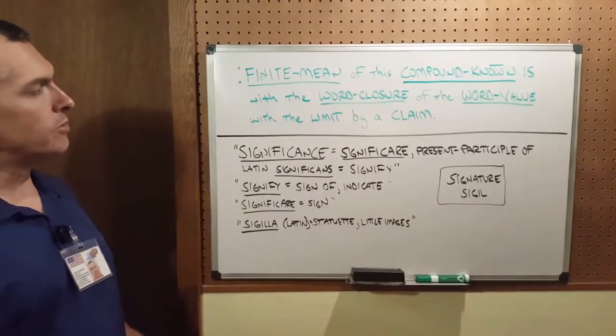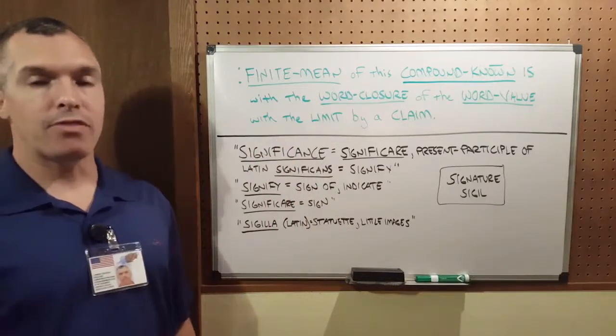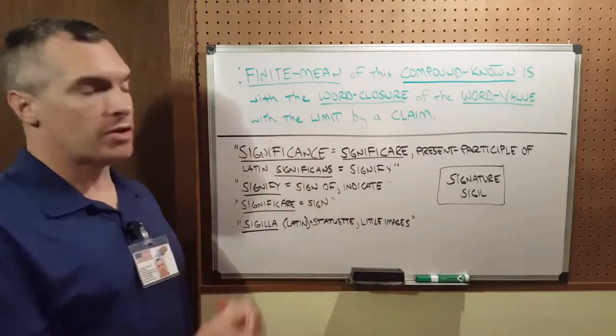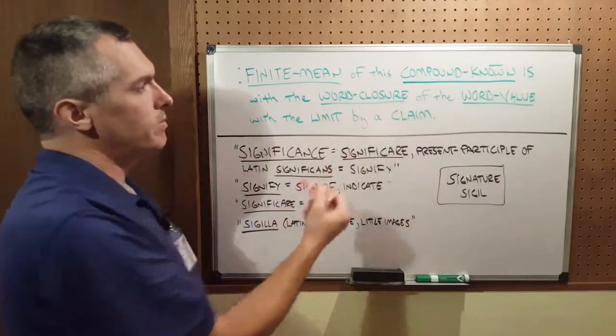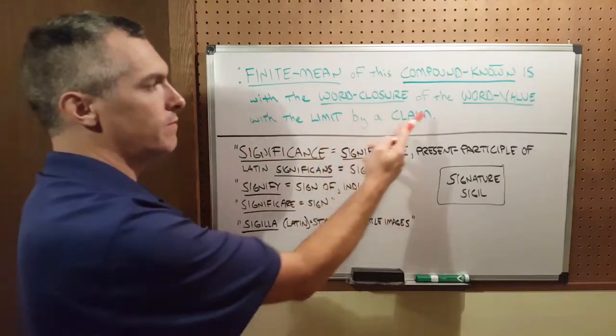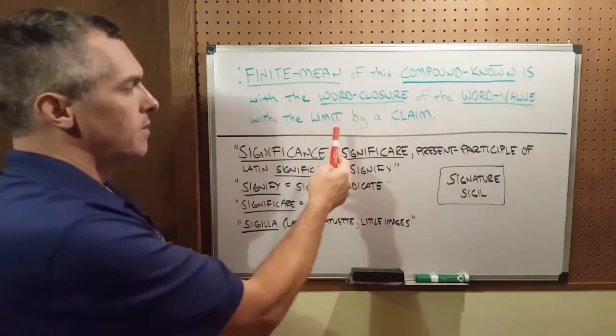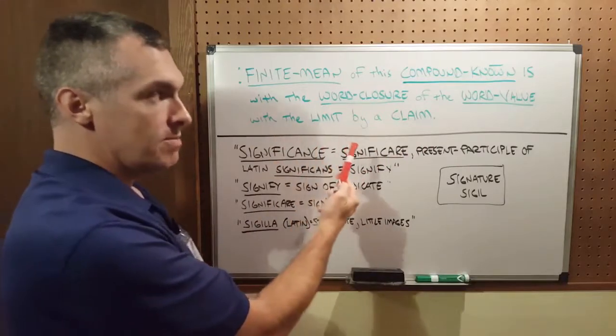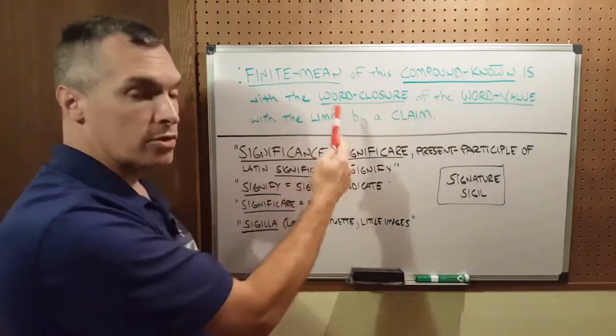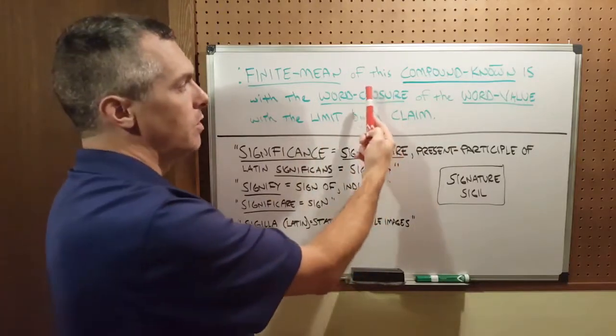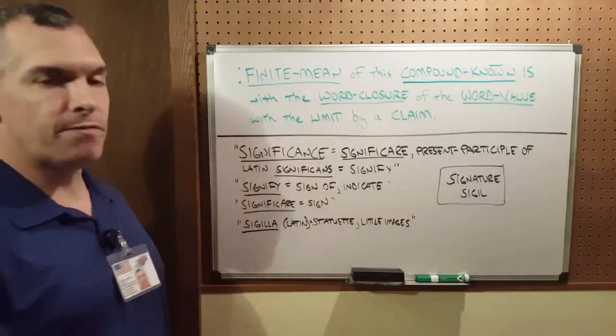I use the word mean, because it also ties into the mathematical qualities of the quantum grammar. So finite mean of this compound known is with the word closure of the word value with the limit by a claim. And backwards, for a claim of the limit is with the word value of the word closure with this compound known by the finite mean.